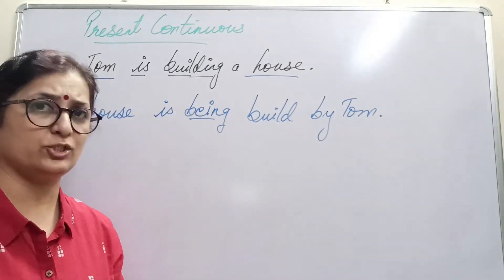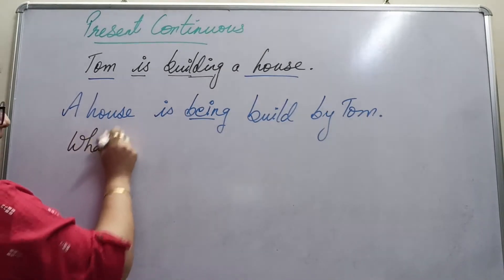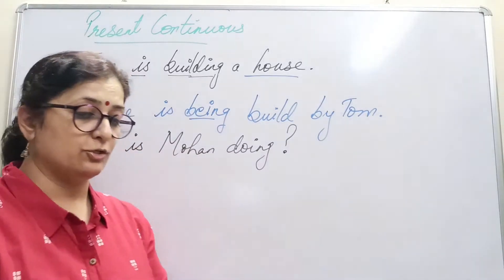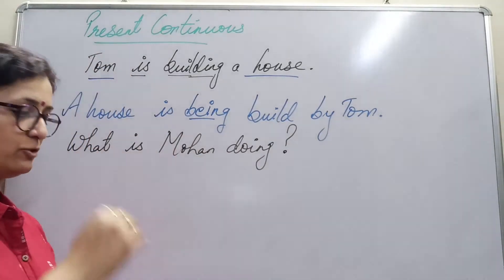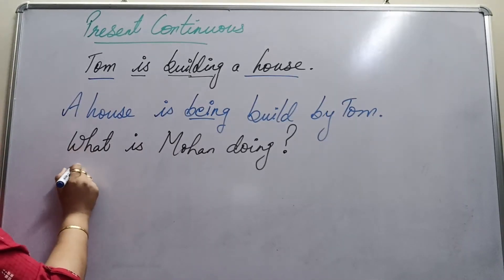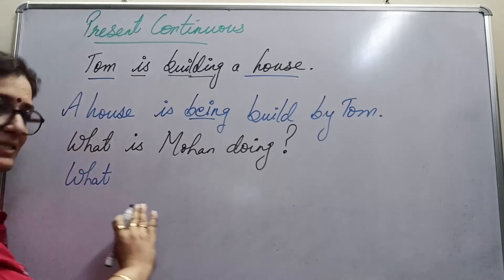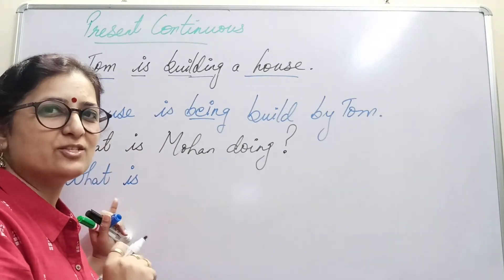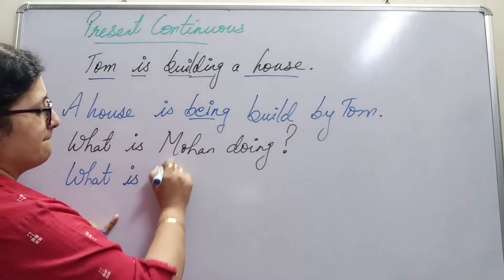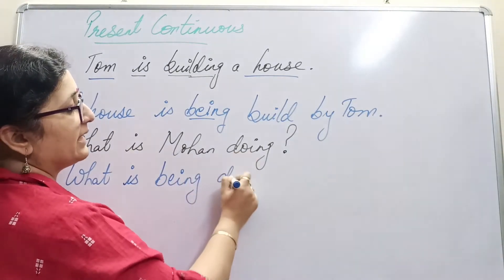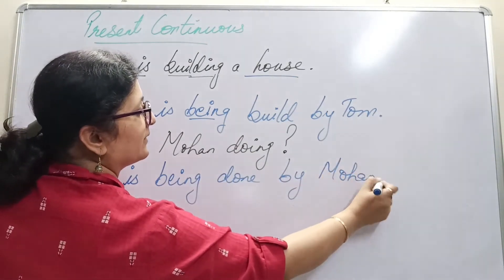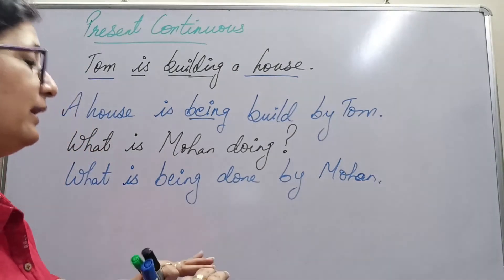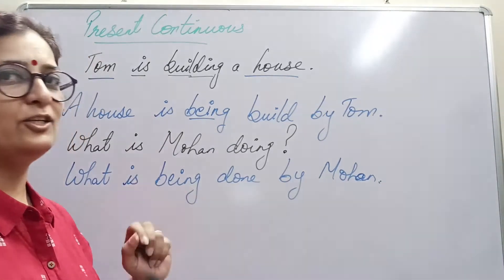Let me give you another sentence in question form: 'What is Mohan doing?' Mohan goes that side and the action comes this side. We keep 'what' the same. Present form, so we keep 'is.' Passive is a little jealous of active — if active has '-ing,' passive will also have it. So: 'What is being done by Mohan?' If you have '-ing' in the active, you'll have '-ing' in the passive also — generally in the form of 'being.'